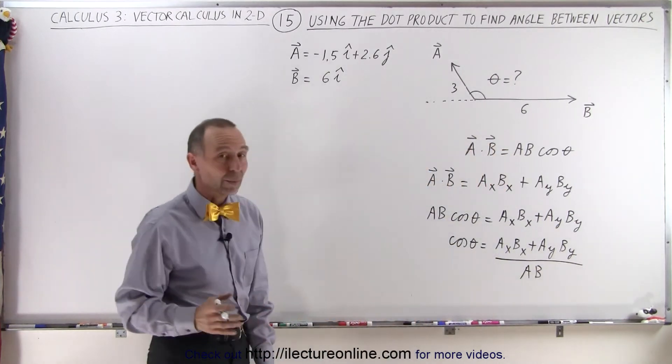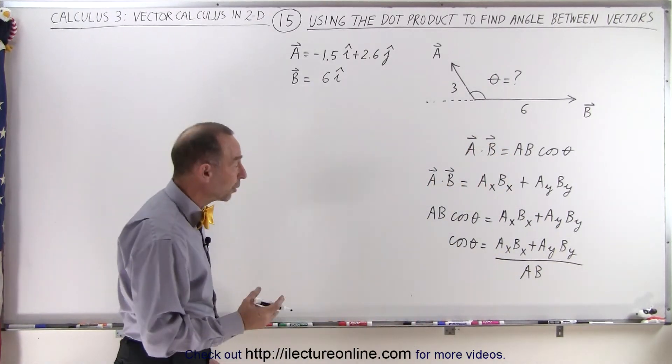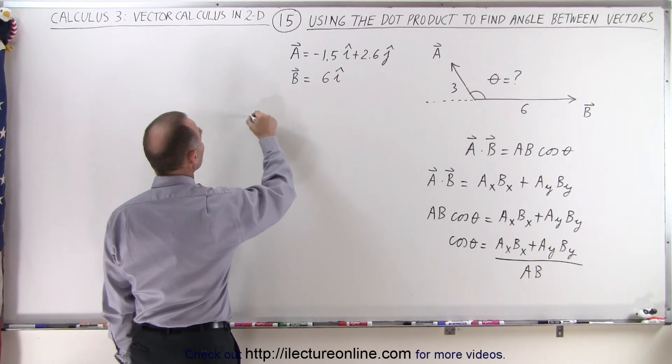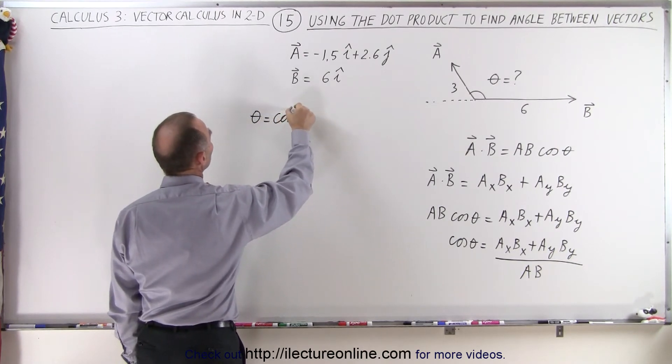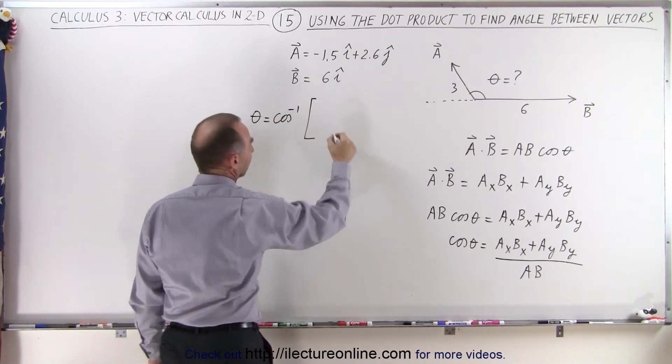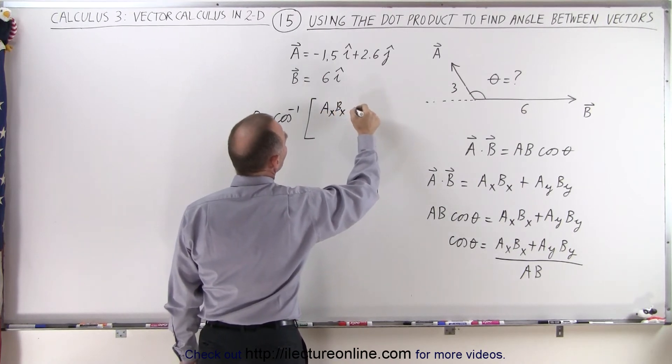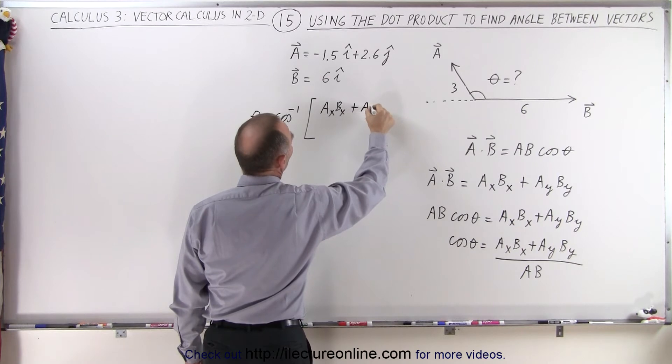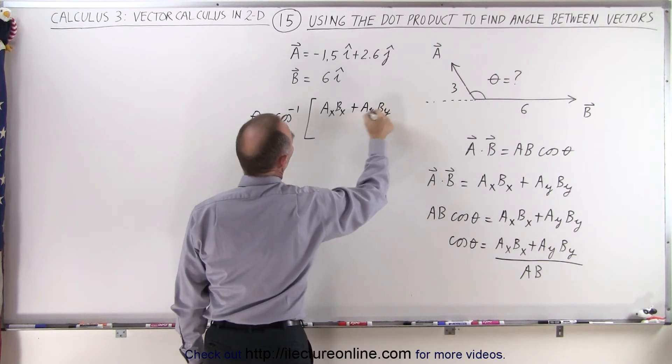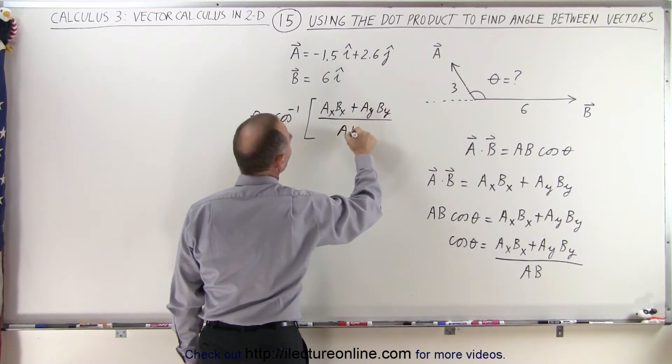And finally, when we take the inverse cosine of both sides, we can say that theta is equal to the inverse cosine of A_x B_x plus A_y B_y all divided by the magnitude of A times the magnitude of B.